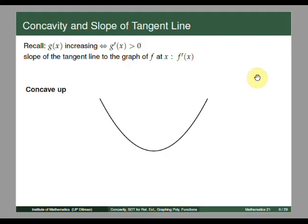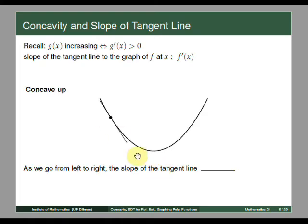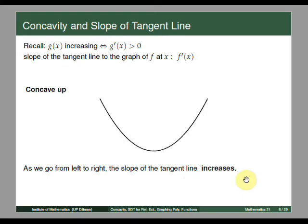Let us observe the slope of the tangent lines to points on the graph from left to right. As we go from left to right, we see tangent lines slanting downward — negative slope — then another with negative slope, then a horizontal tangent line with slope equal to 0, then tangent lines rising to the right with positive slope. So as we move from left to right, we go from negative slope to zero slope to positive slope. Hence, the slope of the tangent line increases.